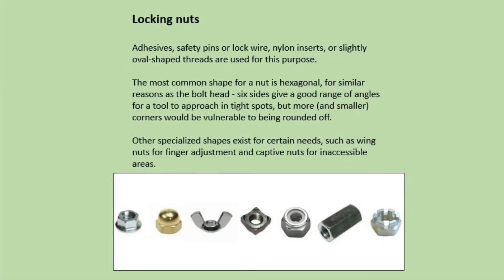Locking nuts. Adhesive, safety pins or lock wire, nylon inserts or slightly oval shaped threads are used for this purpose. The most common shape for a nut is hexagonal for a similar reason as the bolt head. Six sides give a good range of angles for a tool to approach in tight spots, but more and smaller corners would be vulnerable to being rounded off. Other specialised shapes exist for certain needs, such as a wing nut for finger adjustment and captive nuts for inaccessible areas.